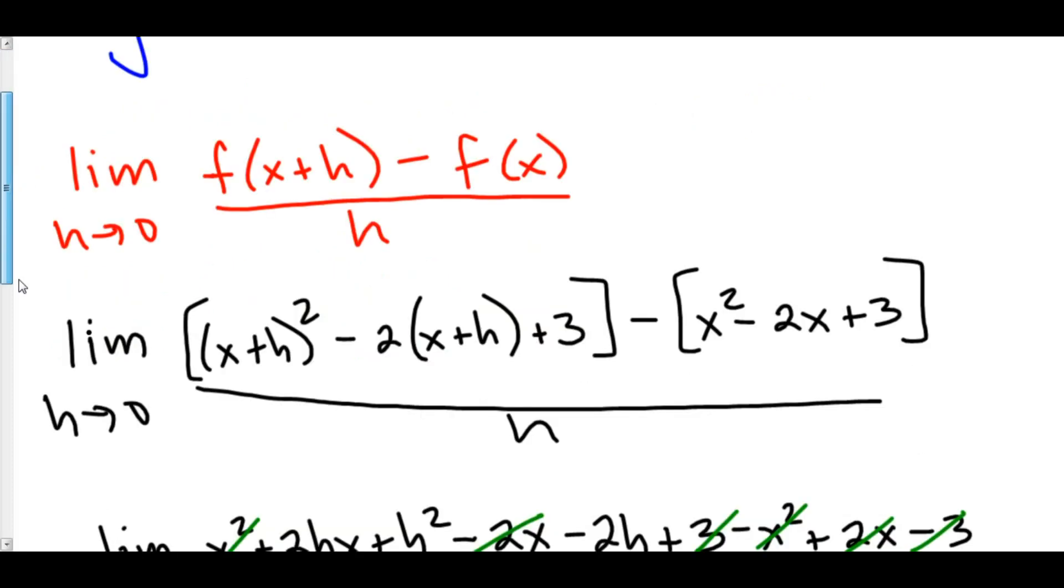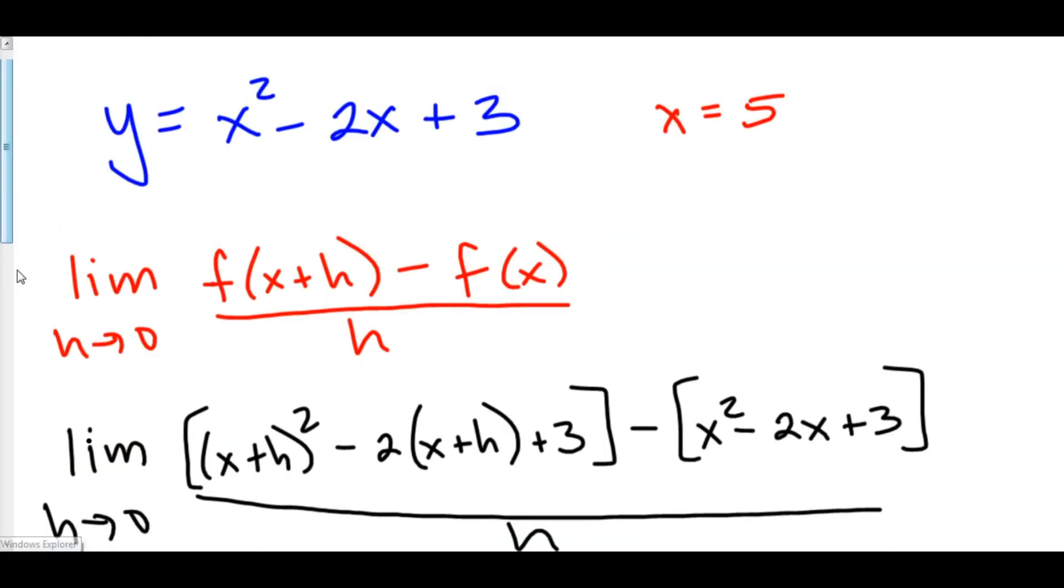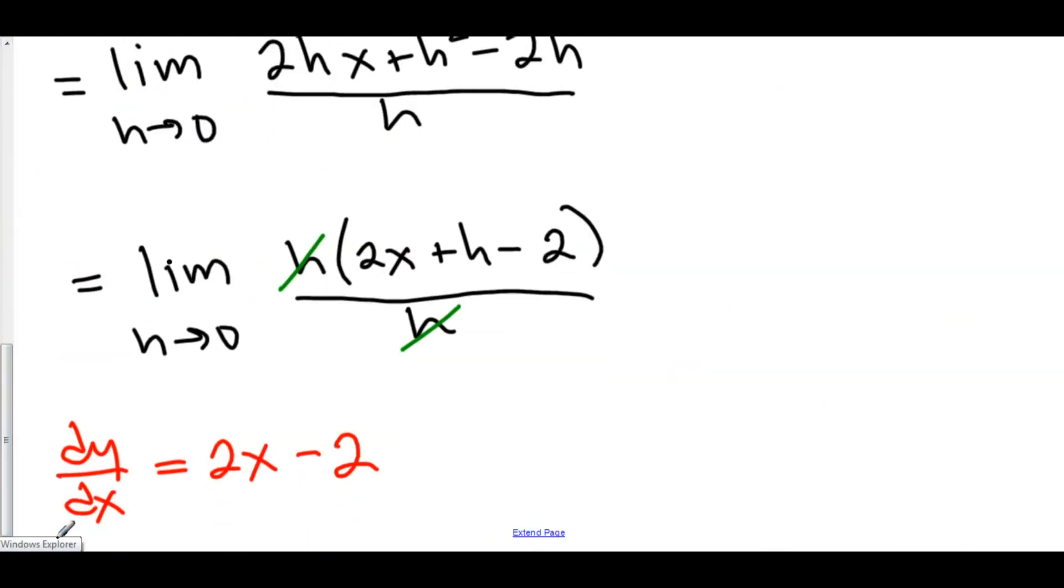Well, you would just plug 5 into dy dx, into the derivative. And you would get 2 times 5 is 10, minus 2, that would be 8. So our derivative at x equals 5 is equal to 8. And therefore, the slope of the tangent line at x equals 5 is equal to 8.